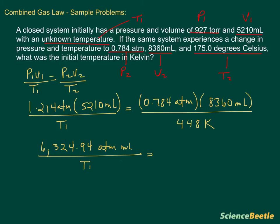And if we do the same thing on the other side and just multiply our numbers, 0.784 multiplied by 8,360, this gives us 6,554.24. Again, our units: atmosphere milliliters divided by 448 Kelvin.